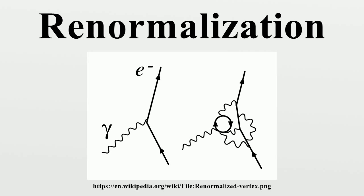When developing quantum electrodynamics in the 1930s, Max Born, Werner Heisenberg, Pasquale Jordan, and Paul Dirac discovered that in perturbative calculations many integrals were divergent. One way of describing the divergences was discovered in the 1930s by Ernst Stückelberg, in the 1940s by Julian Schwinger, Richard Feynman, and Shinichiro Tomonaga, and systematized by Freeman Dyson.